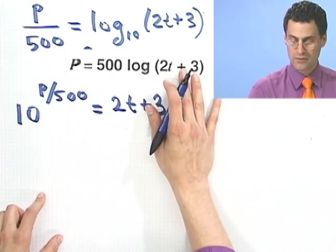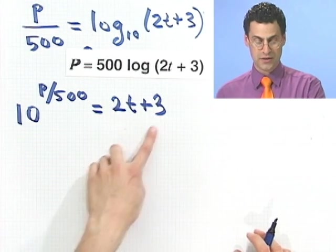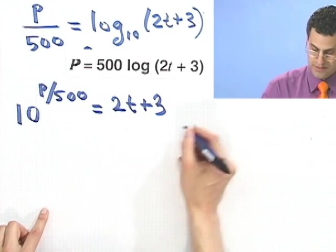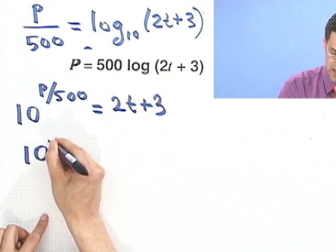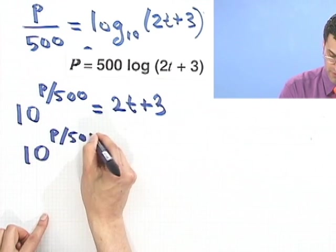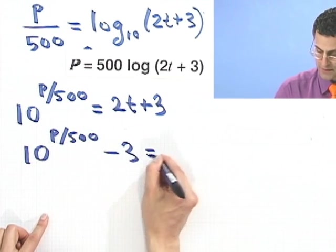Well, great. Well, now what do I do? Well, now what I would do is just subtract 3. So if I subtract 3, I see 10 to the P over 500 power, and then minus 3 equals 2t.